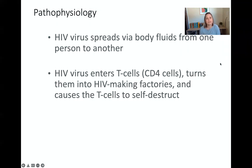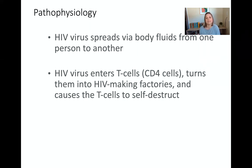HIV is spread through body fluid. The HIV virus enters the helper T cells, also known as CD4 cells, and turns CD4 cells into HIV-making factories. It takes over the control of our own T cells and causes them to replicate HIV virus. When it's done using that T cell as a factory, it causes the T cell to self-destruct.